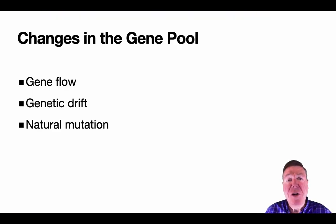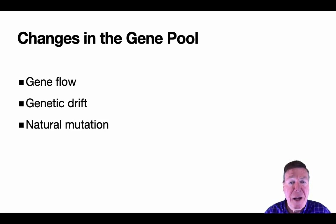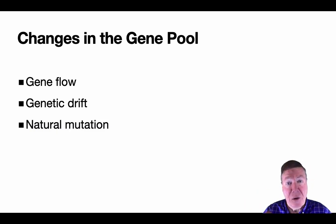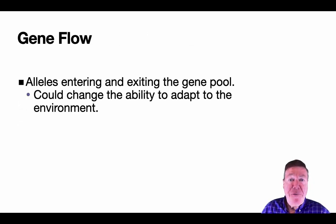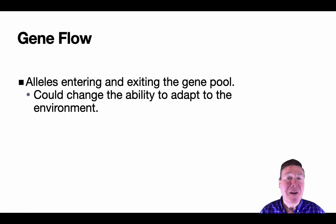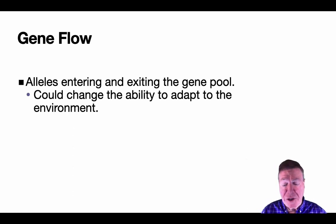So what can we do to change the gene pool? We can talk about gene flow, genetic drift, and natural mutation. Let's talk about gene flow. Gene flow is alleles or genes entering and exiting a gene pool. It could change the ability of organisms to adapt or not — gene flow is just something entering or exiting the gene pool. You can exit the gene pool by death; if an organism with a certain gene dies, that gene no longer exists.